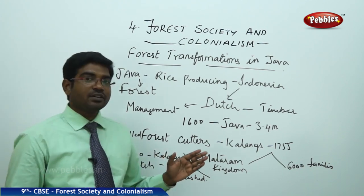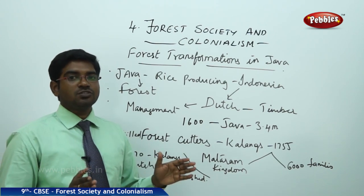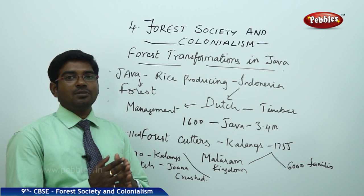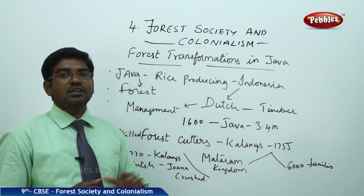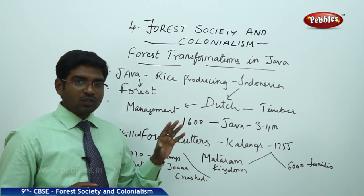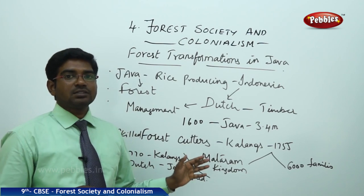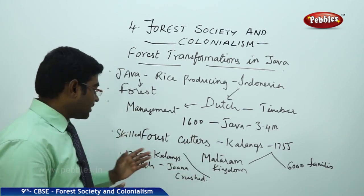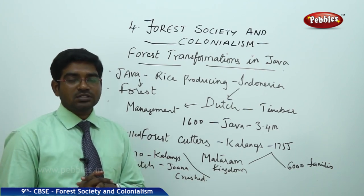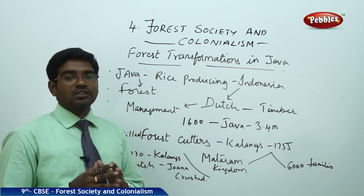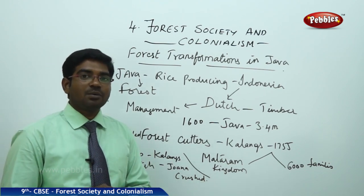In 1755, the Kalangs were once part of the Mataram Kingdom, in which 6,000 families used to stay. When the kingdom got split, the population was divided equally — 3,000 families on each side. The Dutch tried to slowly gain control over the forest regions and control forest tribal communities, as the British did in India. The Kalangs resisted the Dutch move. In 1770, the Kalangs attacked the Dutch Fort Joanna, but this was crushed by the Dutch, just as the British crushed rebellions in India.